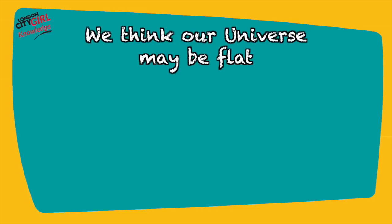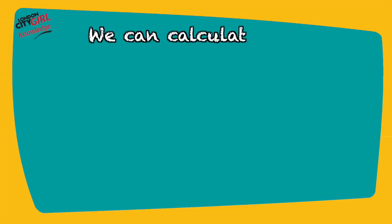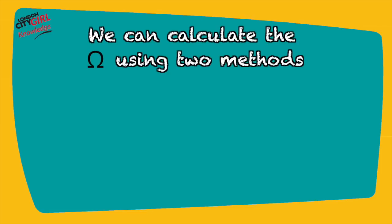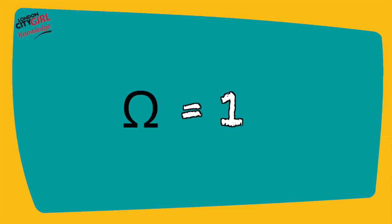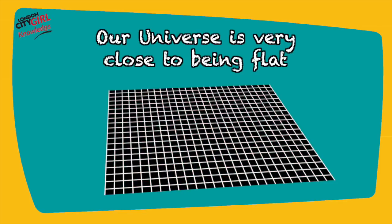We think our universe may be flat. We can calculate the density parameter using two methods, and both methods indicate that it is very close to 1, therefore suggesting that our universe is very close to being flat.